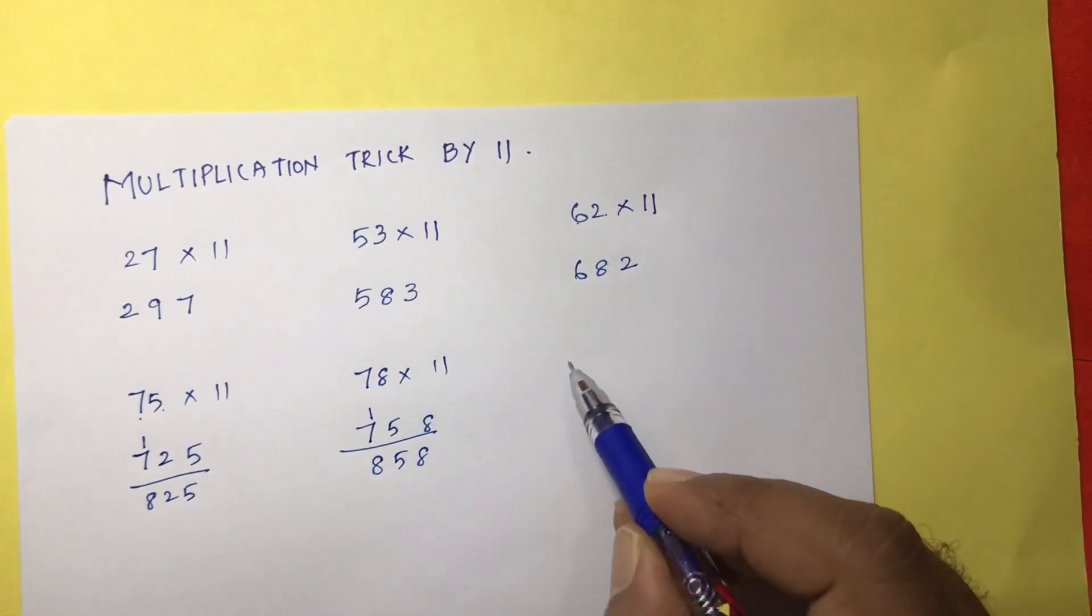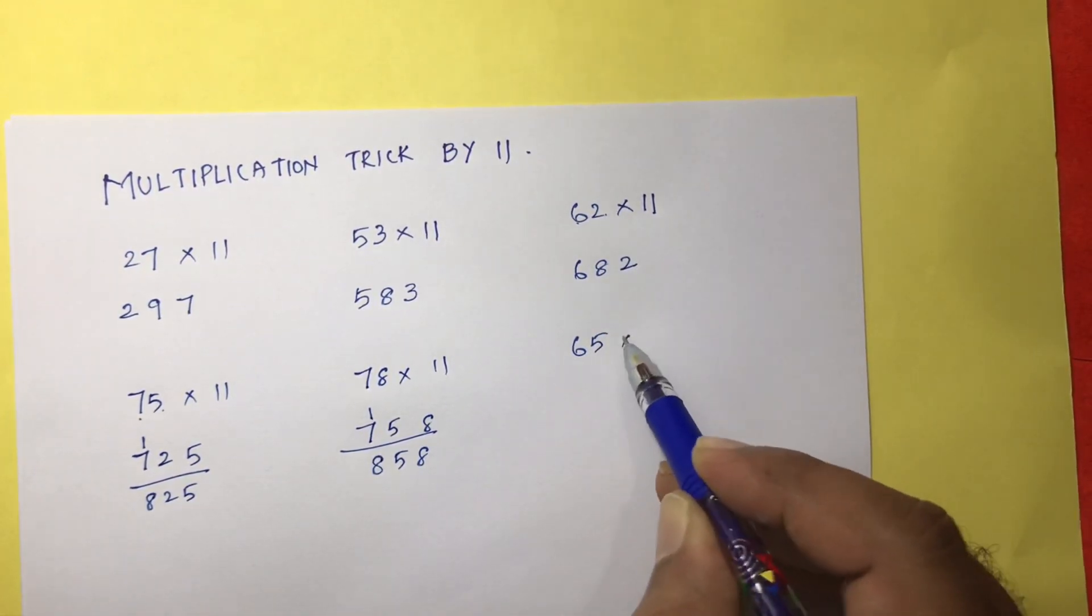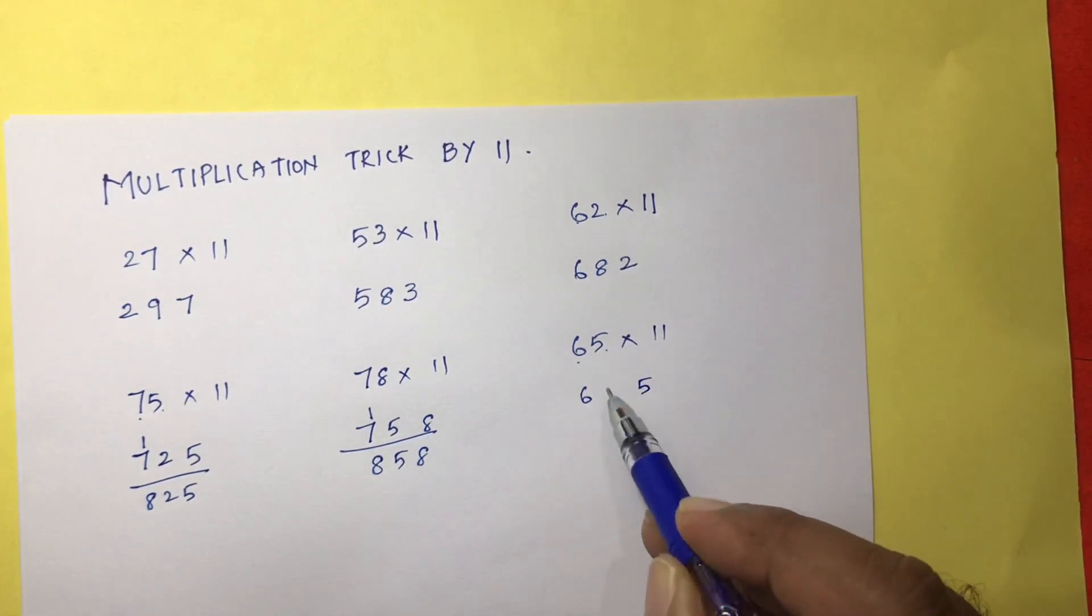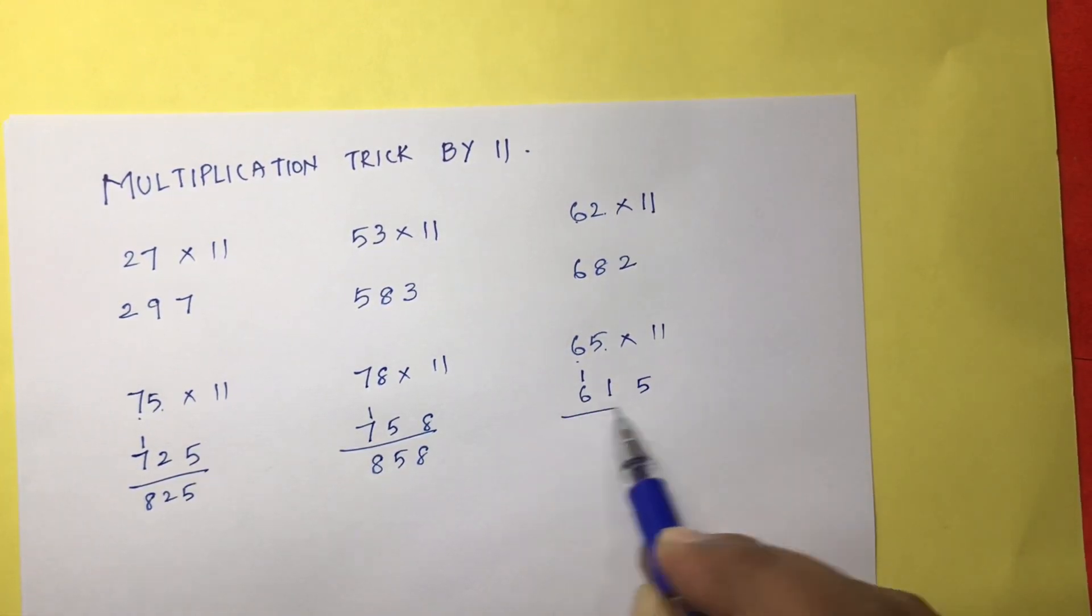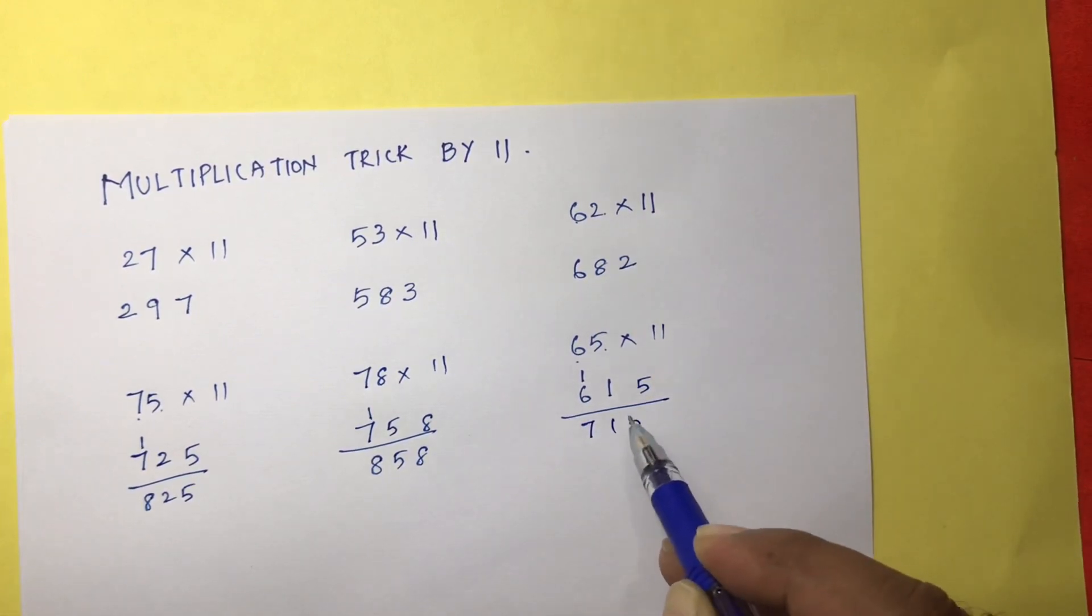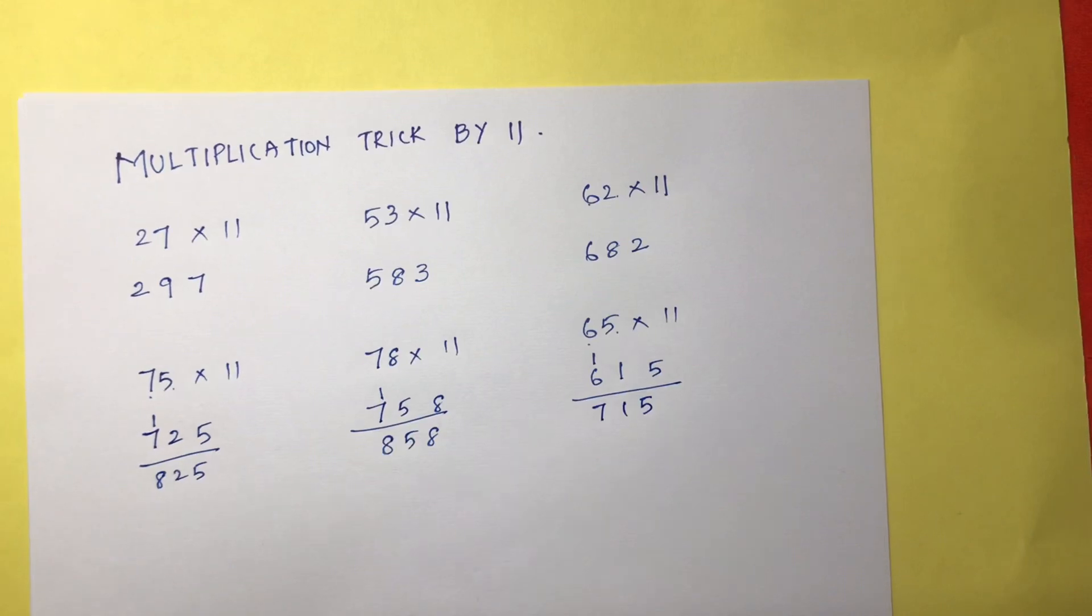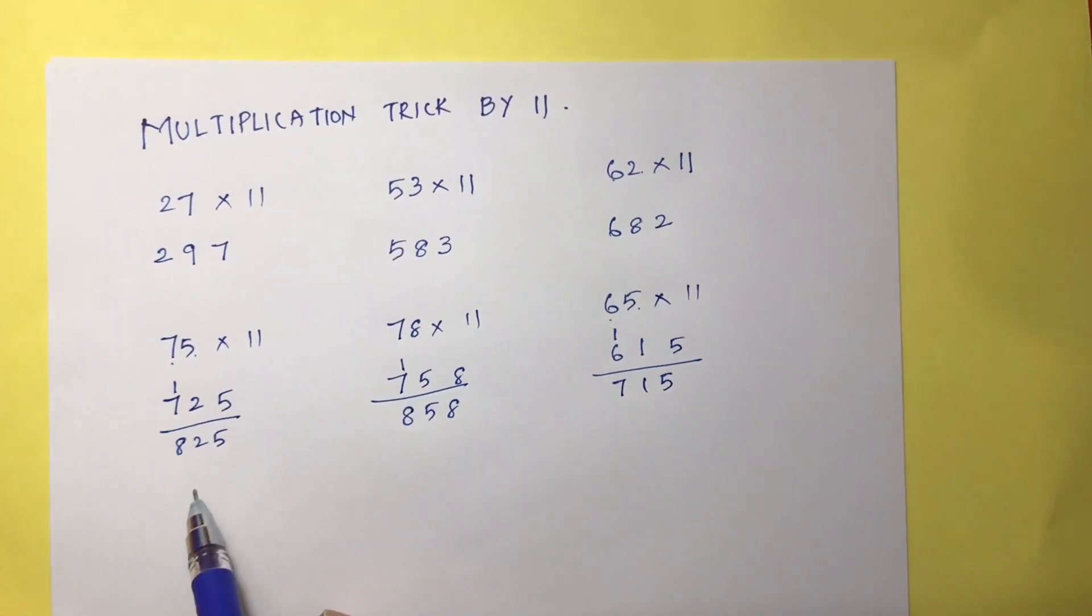One more example: 65 into 11. So 6, 5. 6 plus 5 is 11, 1 here, 1 here. So the answer will be 715. This is the multiplication trick by 11. If you take three digits, for example,